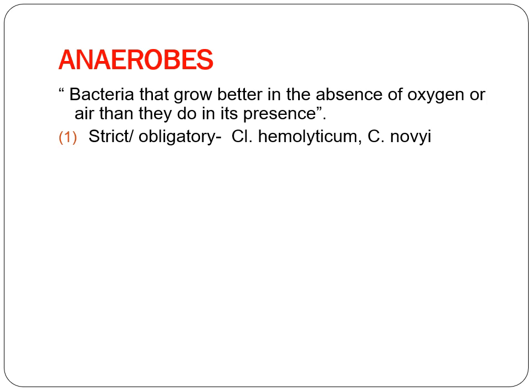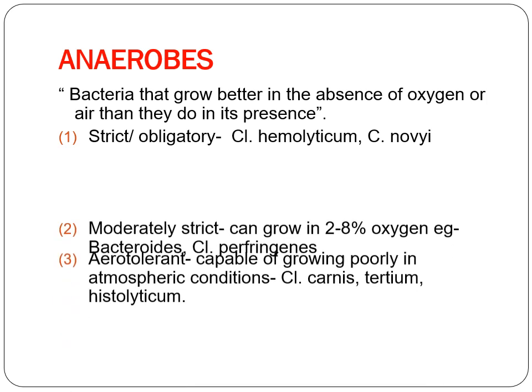Depending upon the presence or absence of these enzymes, anaerobes can be strict or obligatory — like Clostridium hemolyticum, which will die in the presence of oxygen. They can be moderately strict, growing in 2–8% oxygen, like Bacteroides. Or they can be aerotolerant, capable of growing poorly in atmospheric conditions, like Clostridium tertium or histolyticum.